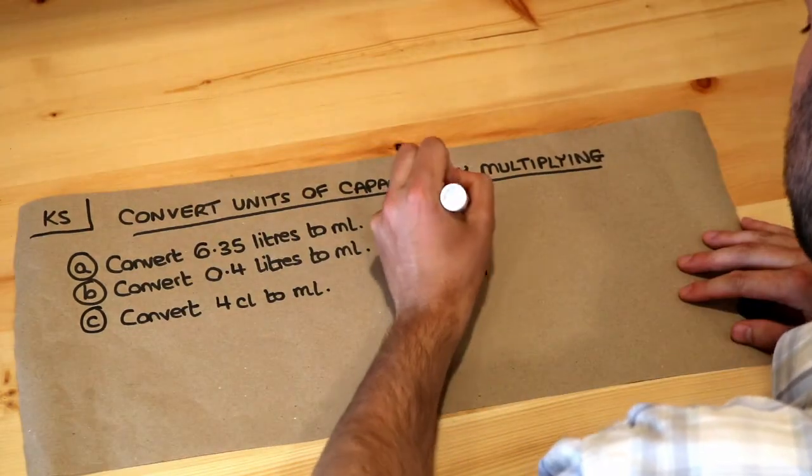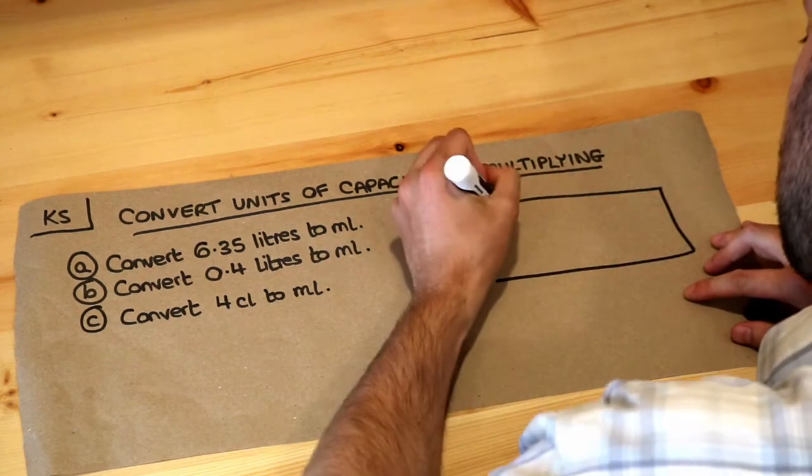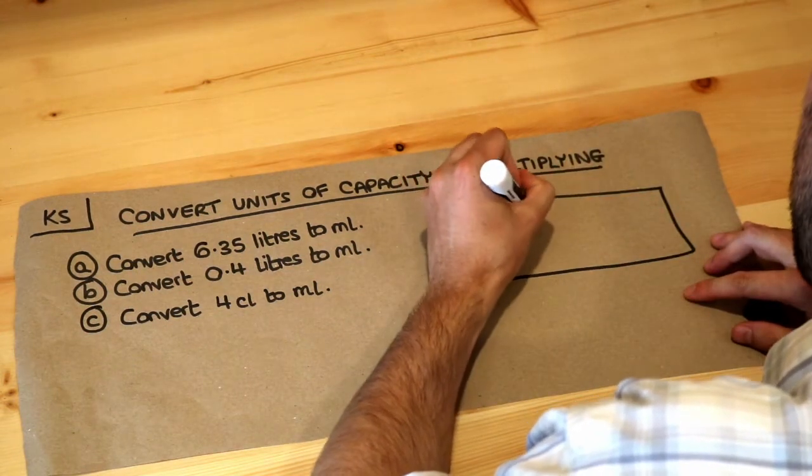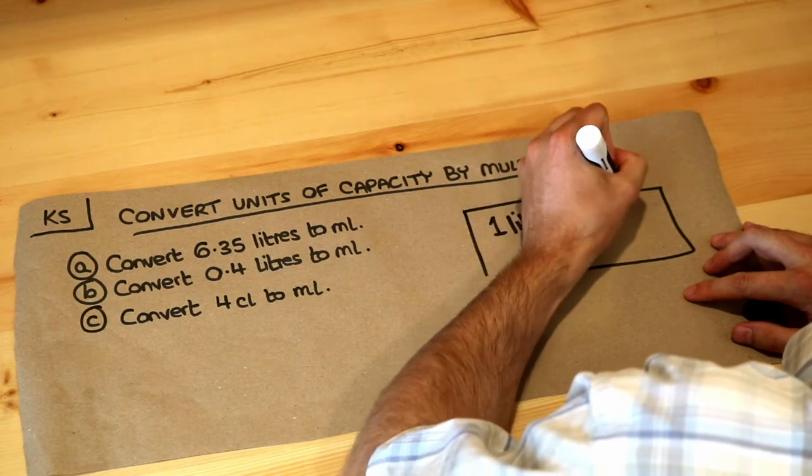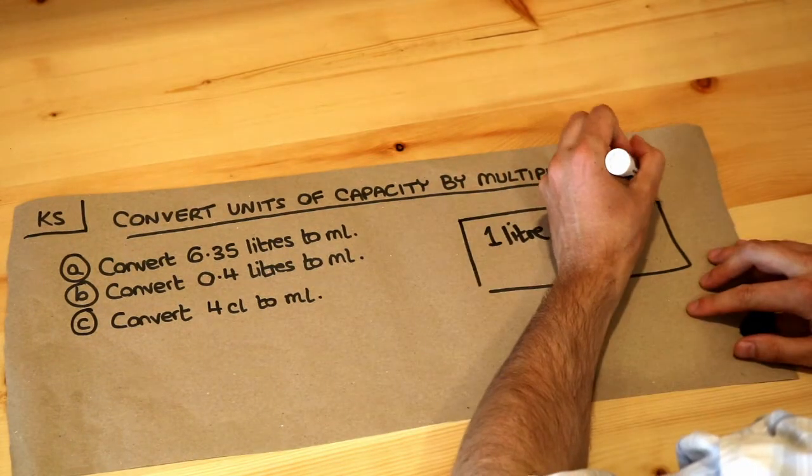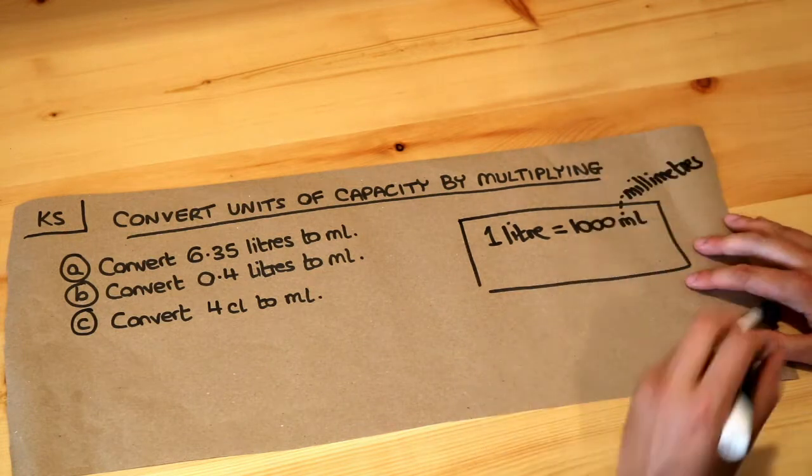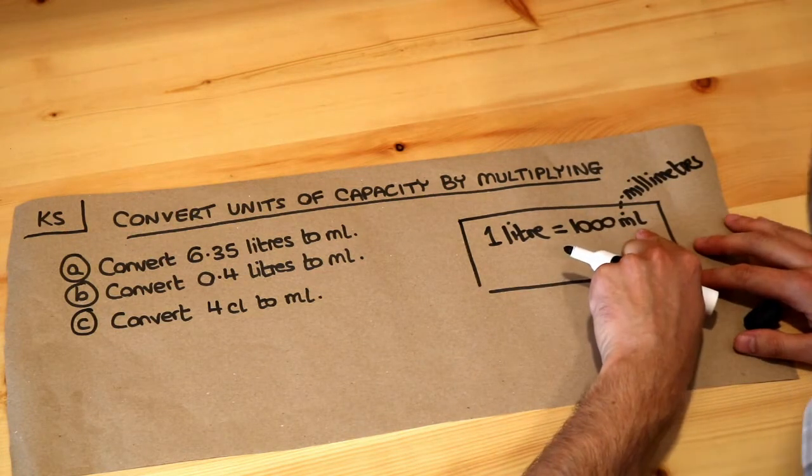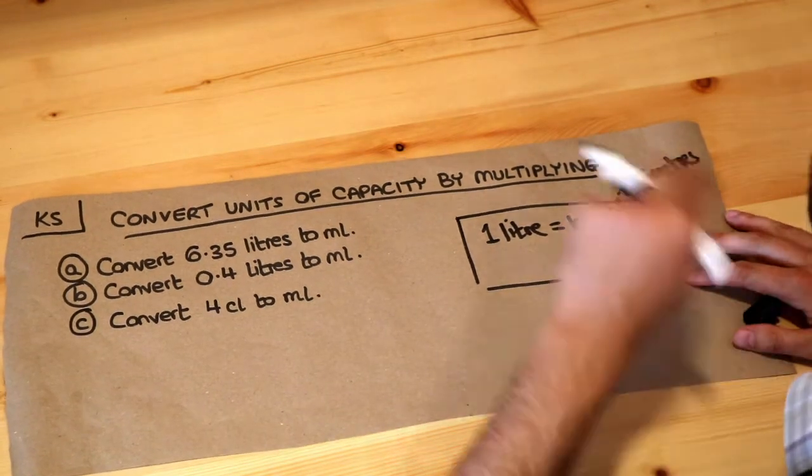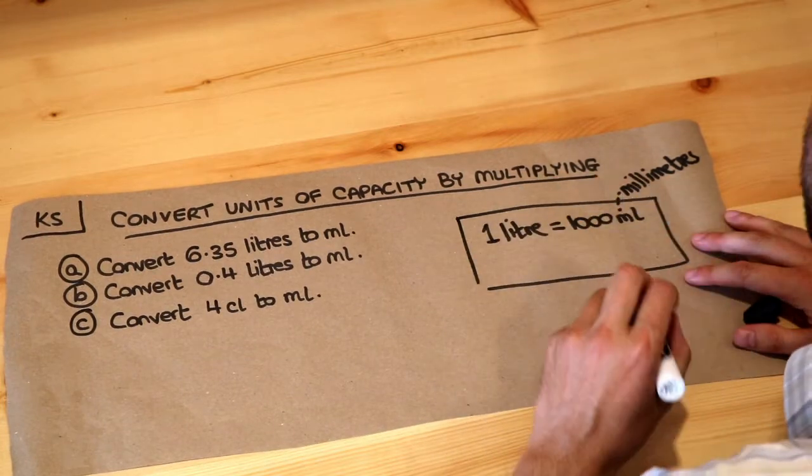There's just a couple of conversions you need to know for this video. If you had one liter, that is equal to a thousand milliliters. The M stands for milli, and milli means a thousandth of. So one milliliter is a thousandth of a liter, and similarly one liter is a thousand milliliters.